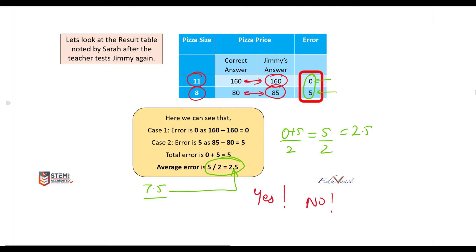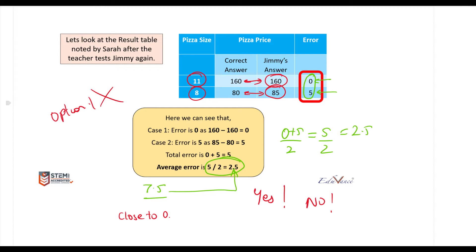The error has come down — yes it has — but is it good enough? The answer is no. If you remember, it has to be as close to 0 as possible. So now with option number one, which was increasing the number of training data points, since that option did not work, Sara asks Jimmy: let's try a new teacher and see what happens.